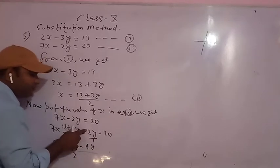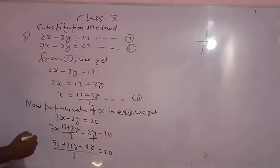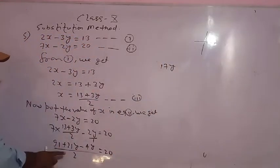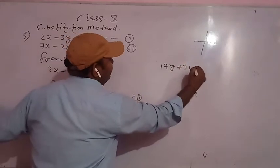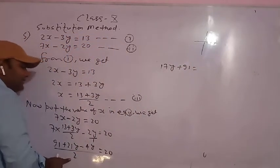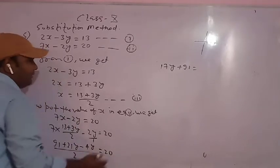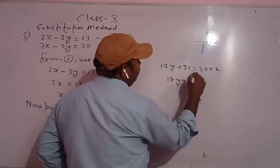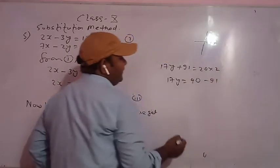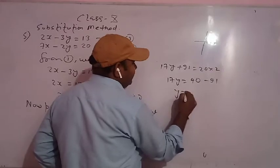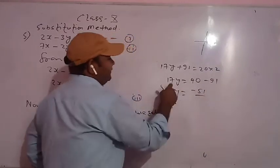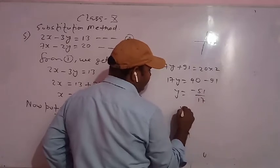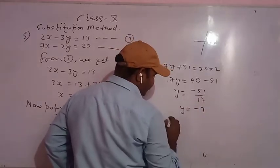And 2y has to multiply by 2 giving 4y, because its denominator is 1, so it becomes 4y. Now simplify: 21y minus 4y is 17y, and plus 91. Take 2 to the right side — it was in divide form, so it becomes multiplied: 20 times 2 is 40. Then 17y equals 40 minus 91, which is minus 51. 17 comes to the right side in divide form, giving y equals minus 3.